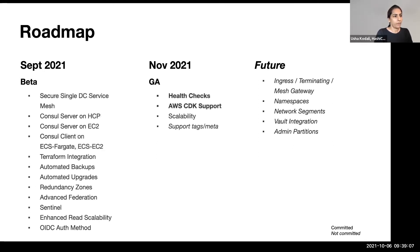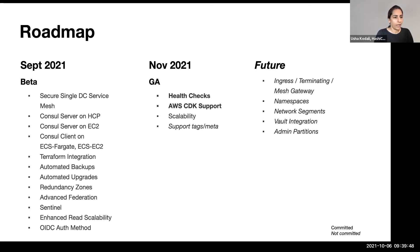With GA, we will be supporting health checks. While beta supports native health checks on console, the health checks on ECS will be synced onto console so that you don't have to run your health checks twice for both console and ECS. This way there will be one single source of truth. Also with our Amazon partnership, we are developing CDK support to employ your CDK workflows. For scalability, we are focusing on performance testing to provide guidance on resources for containers.